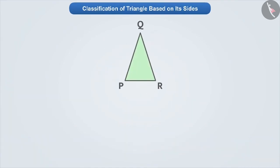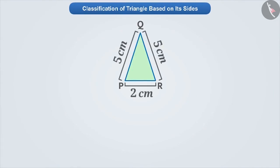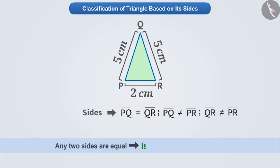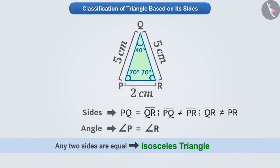Now, look at this triangle. If we take the measurement of its sides, then we find that two of its sides are equal and the third side is not equal to the other two sides. A triangle whose any two sides are equal is called an isosceles triangle. If we measure its angles, then we will know that the angles opposite to the equal sides are also equal. This means that two sides and two angles of an isosceles triangle are equal.